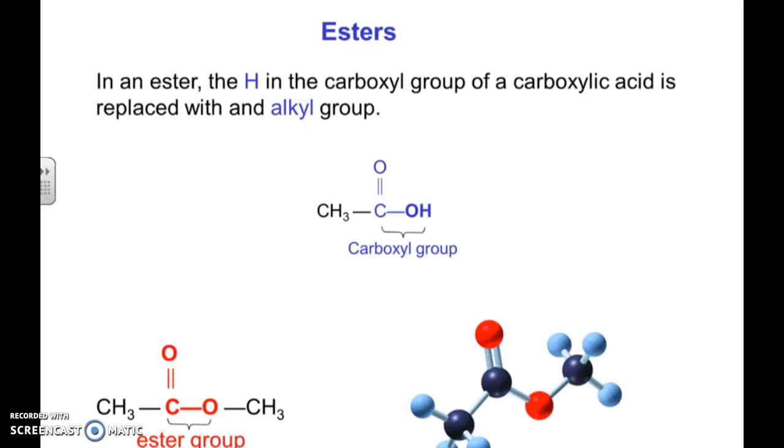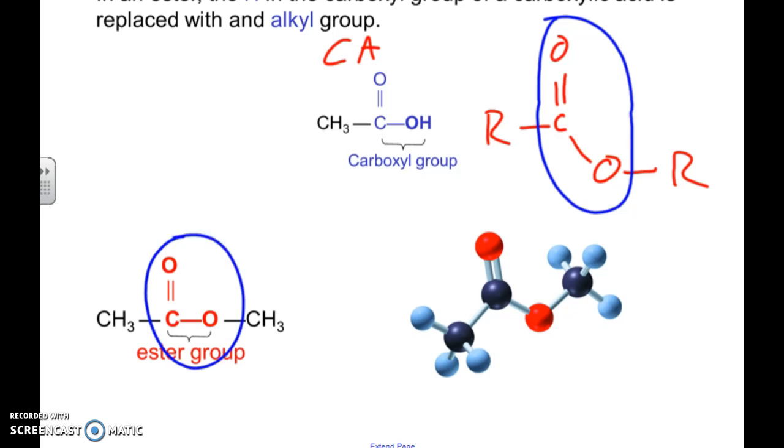For our next video, we're going to be talking about esters. Esters are very similar to carboxylic acids, which we covered previously. What makes an ester different is you've got your carbon chain, C double bond O, and that attaches to, instead of an OH, an O and then another carbon chain. We call this whole piece here an ester group.